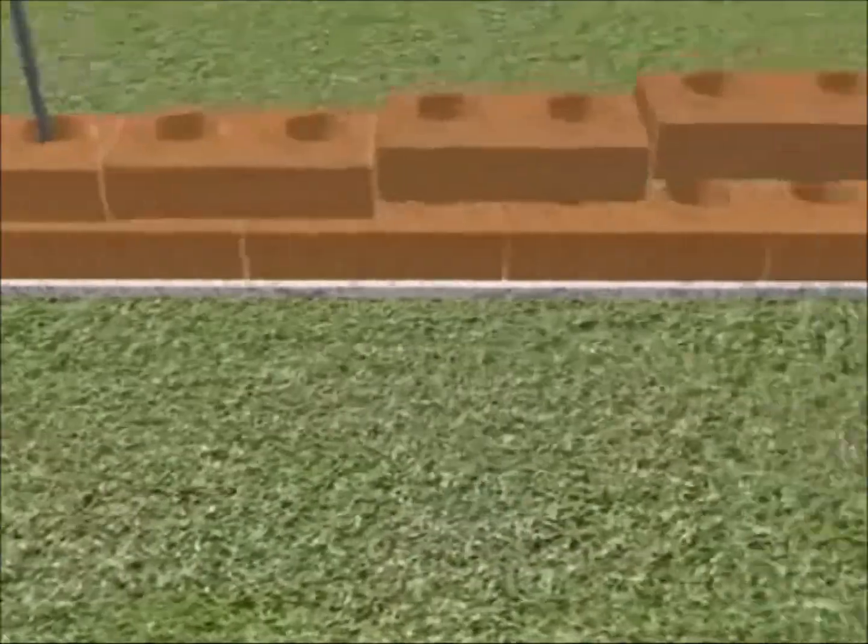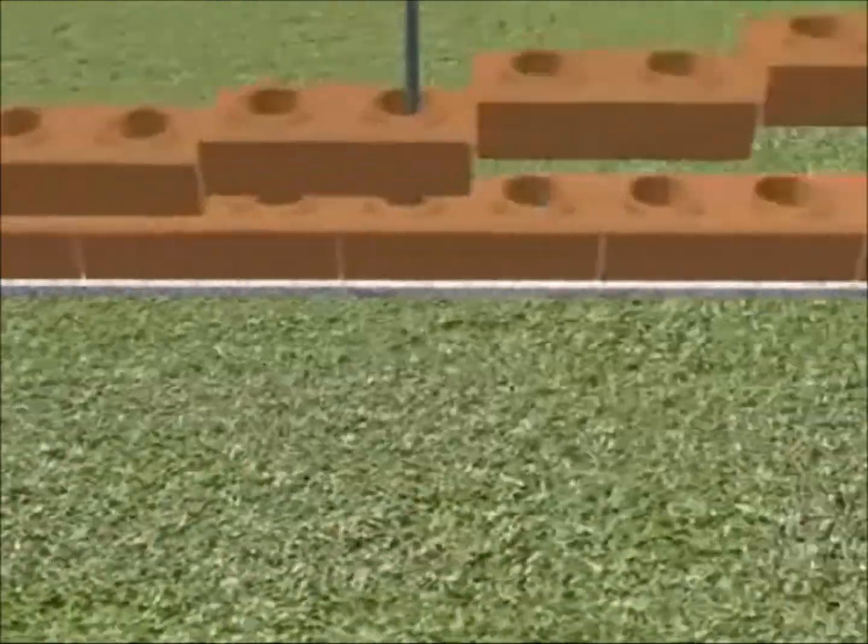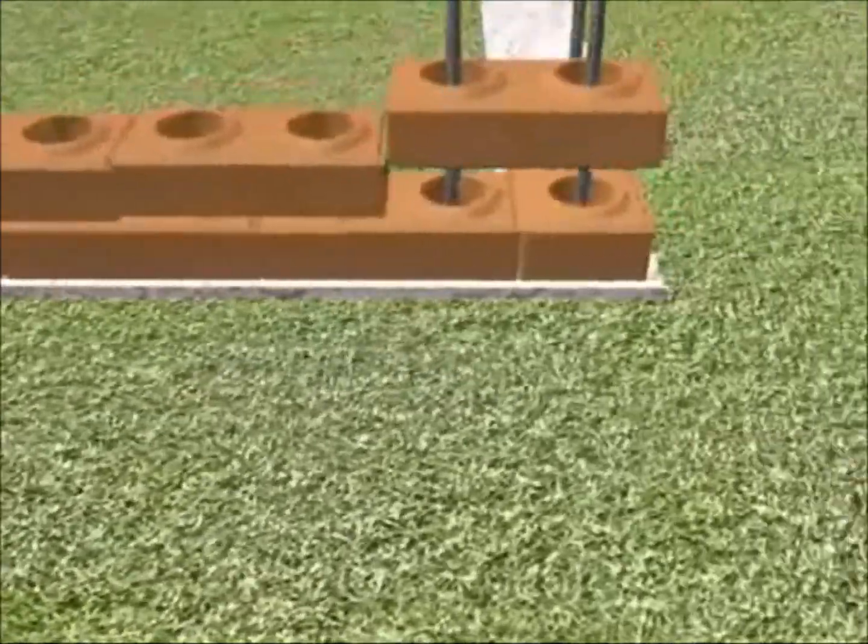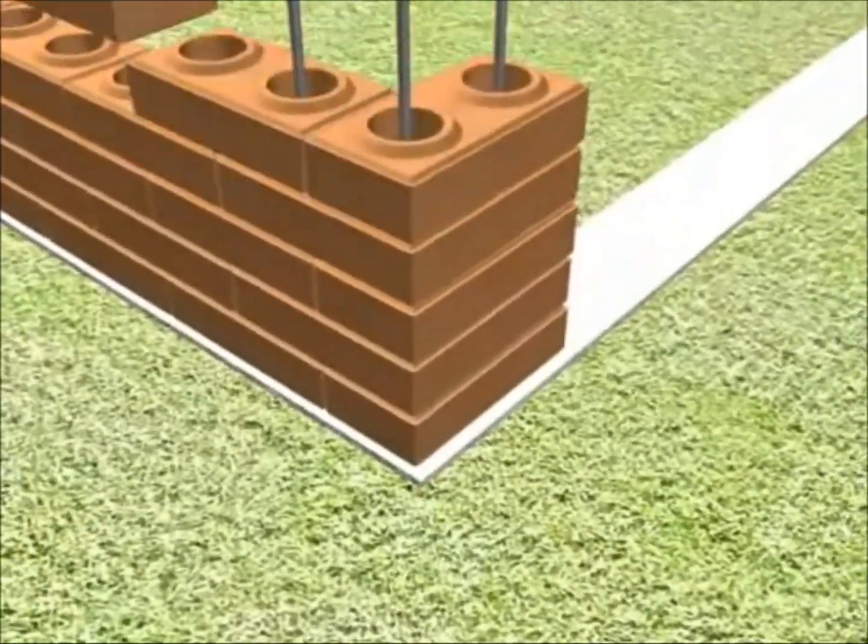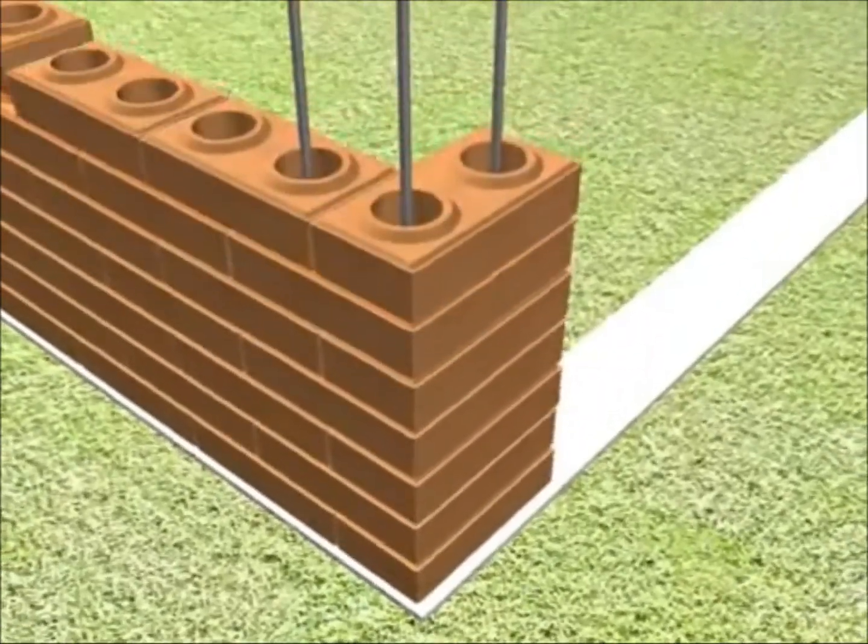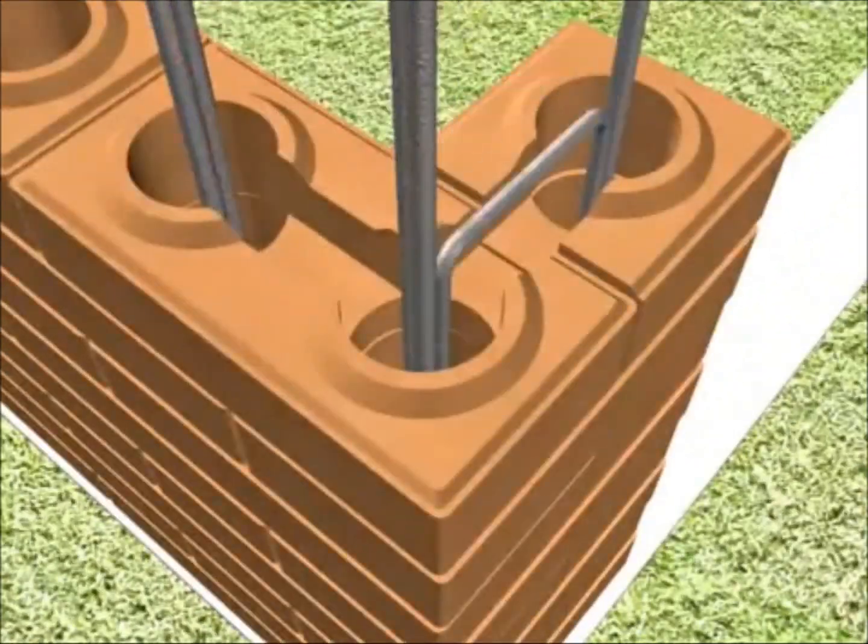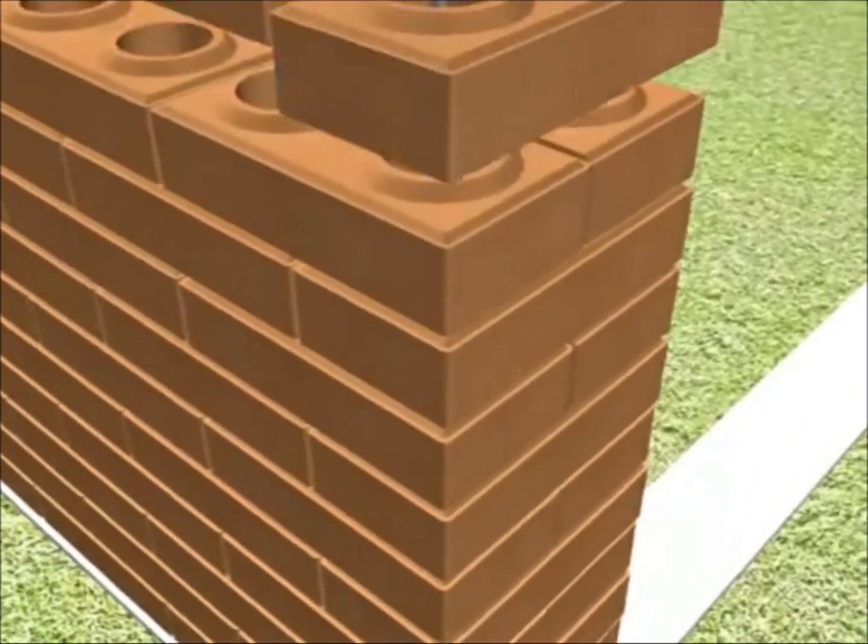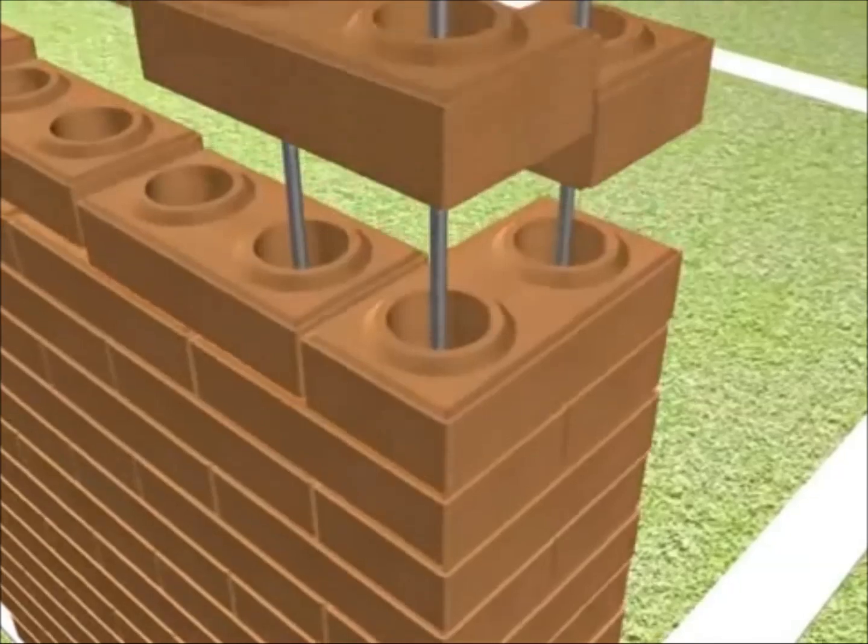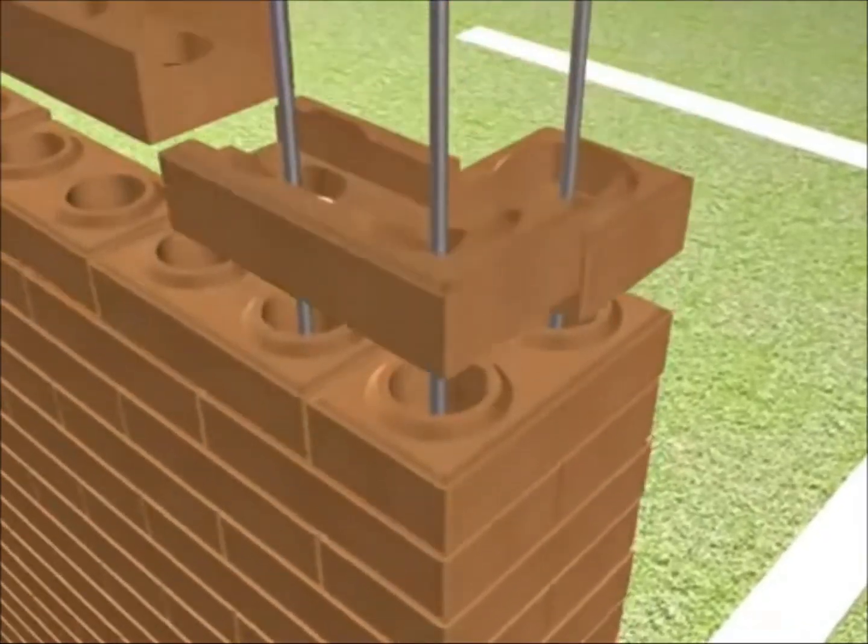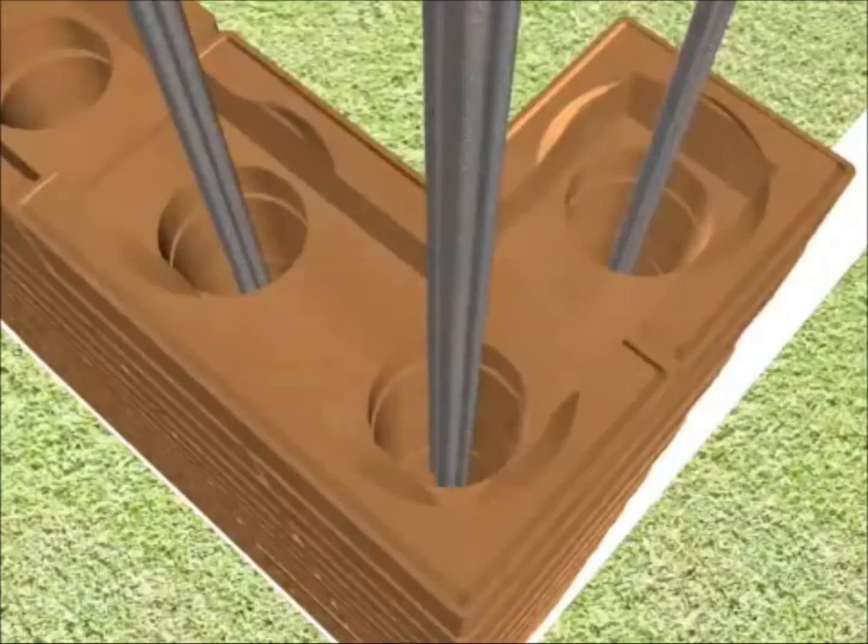The rods that you see actually help later on when we pour in the concrete to make internal columns. The interlocking blocks are put together, and then periodically we pour these rebars. At three and a half feet, we create a lintel which ties the entire wall together.